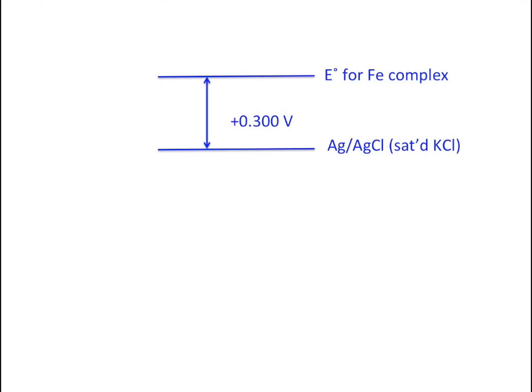Let's imagine that we measured the formal potential of an iron complex using a silver-silver chloride reference electrode with saturated KCl reference solution. What would the voltage have been if we had used a normal hydrogen electrode?